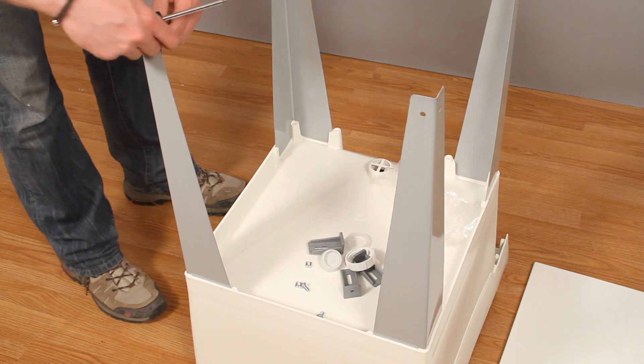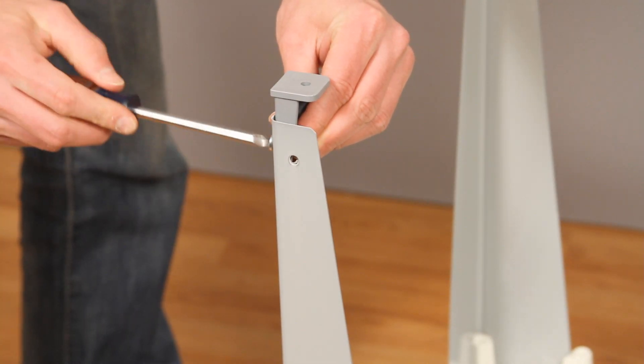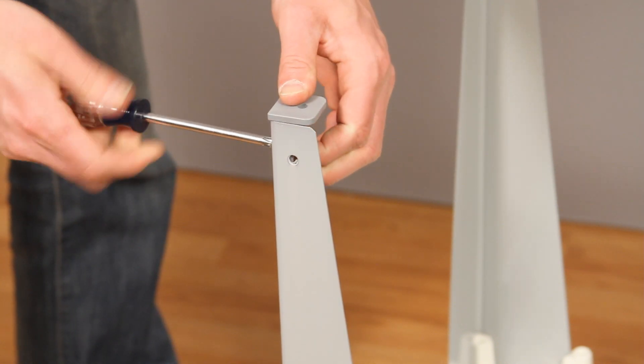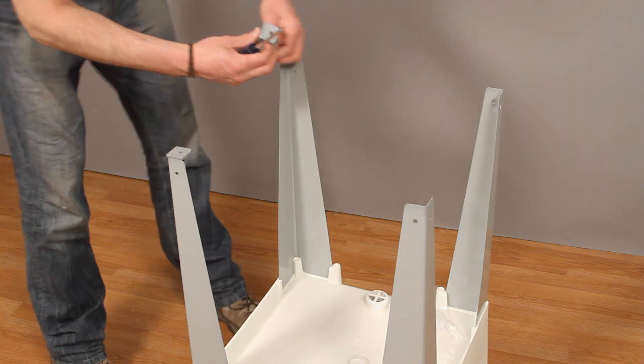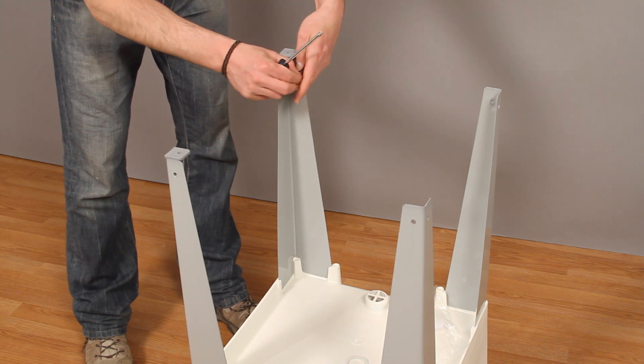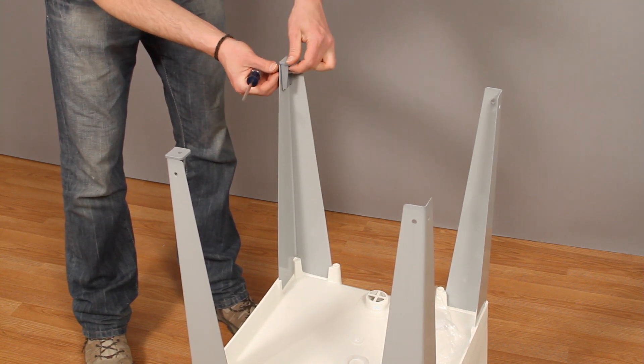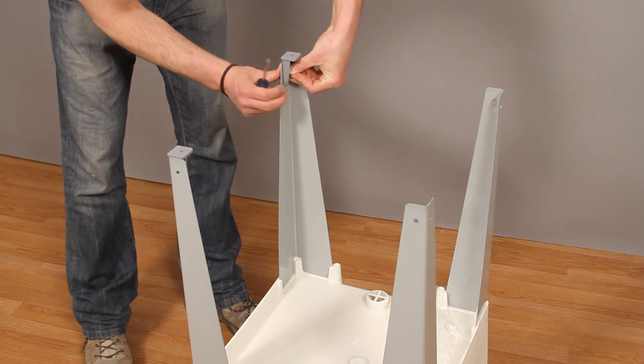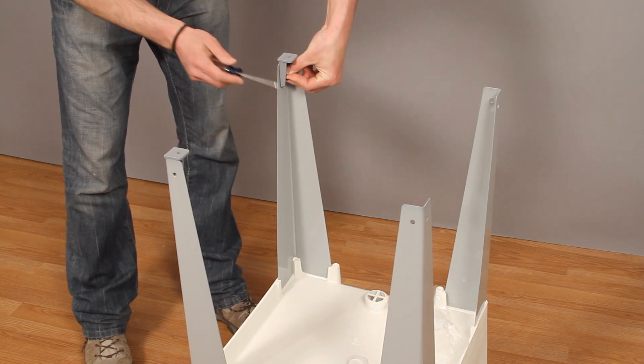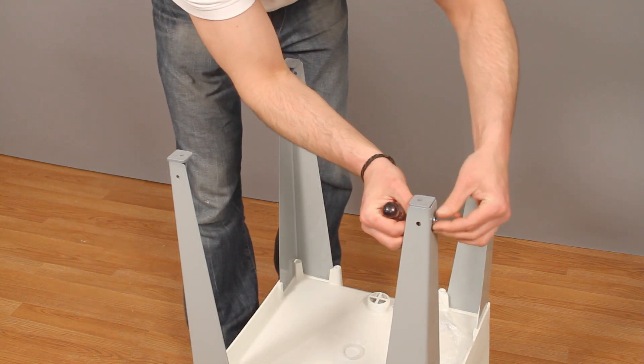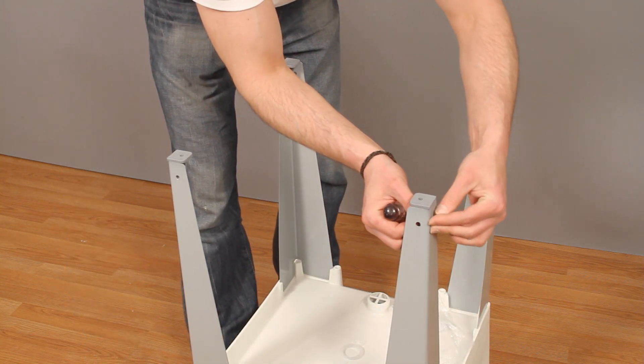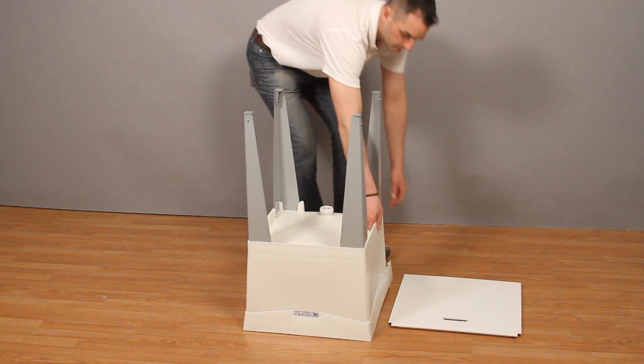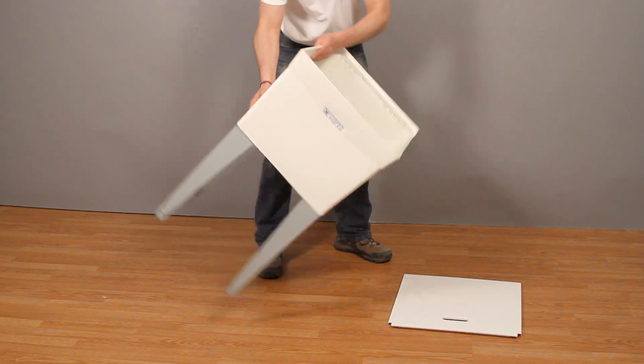When you've finished installing the legs, place the molded levelers onto the bottom of the tub legs as shown. Now you can turn the tub upright.